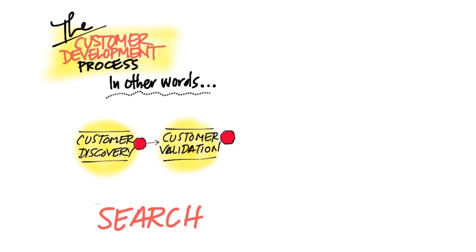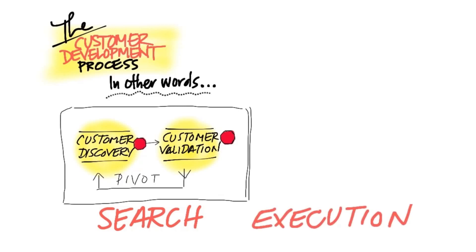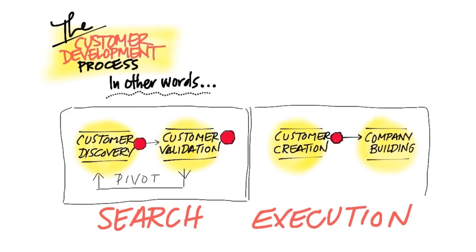Instead of randomly doing this by hiring and firing sales execs and trying to make numbers that are really just random guesses, we're actually going to have you get out as early as possible and test some of these primary assumptions. One of the interesting things on the bottom of this diagram is something called the pivot, and the pivot is what will save your job. Once you find a repeatable and scalable business model, you go into the execution phase — creating end-user demand and scale through customer creation, then building the organizations to scale your company by transitioning into a functional organization oriented for constant and rapid execution.